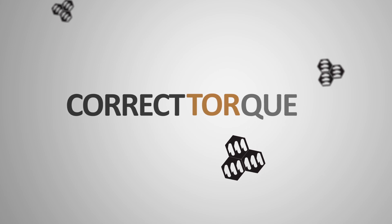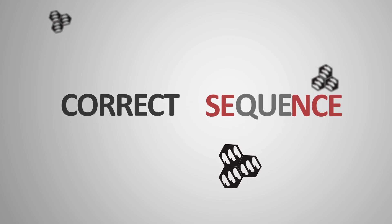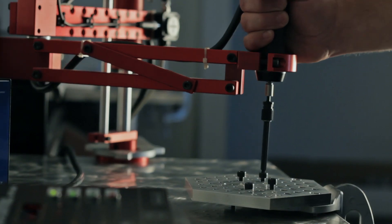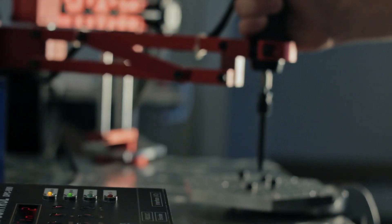The position control torque arm ensures the operator applies the correct torque in the right sequence. Lights and audible cues alert the operator when the tool is in the correct fastening position.